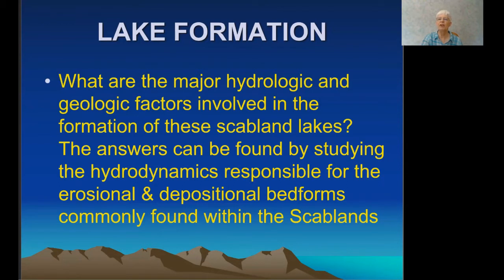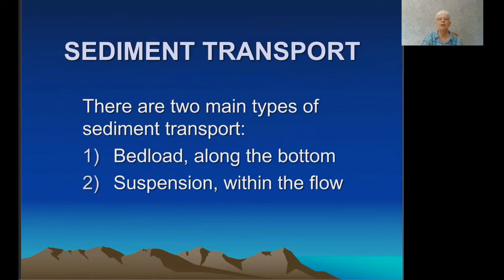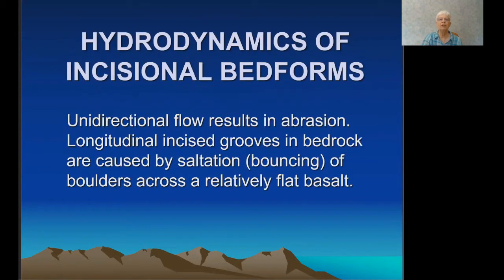The emphasis of this talk is on pre-flood geologic conditions that control the size and distribution of the scour lakes formed in the uppermost portion of the Cheney-Palouse Scabland track, followed by a discussion of paleoflow dynamics. The most impressive erosional forms created by the Missoula floods are probably the abandoned dry cataracts, but first I want to talk about erosional processes. Sediment transport and erosion are two of the most important flow factors when discussing the hydrodynamics of lake formation. There are two main types of sediment transport: bed load along the bottom — the biggest particles are rolled and bounced along the bottom — and suspension particles that stay within the flow of the water above the bottom. There are two main types of stream current flows: unidirectional or downstream, and helical or rotational eddies and vortices. Unidirectional flow results in abrasion and plucking.